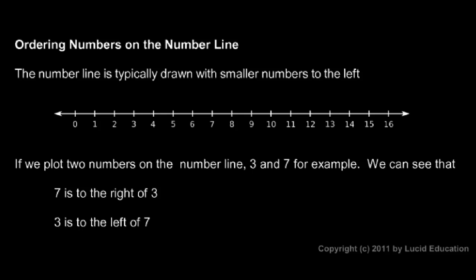Now we'll say a few things about ordering numbers on the number line. The number line is typically drawn with smaller numbers to the left and larger numbers to the right.